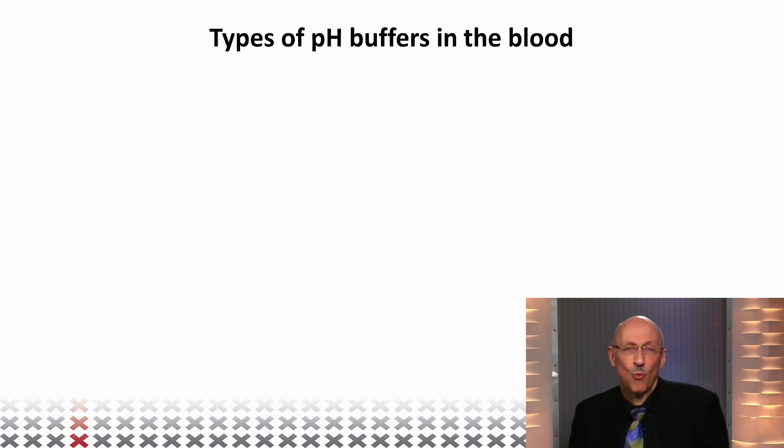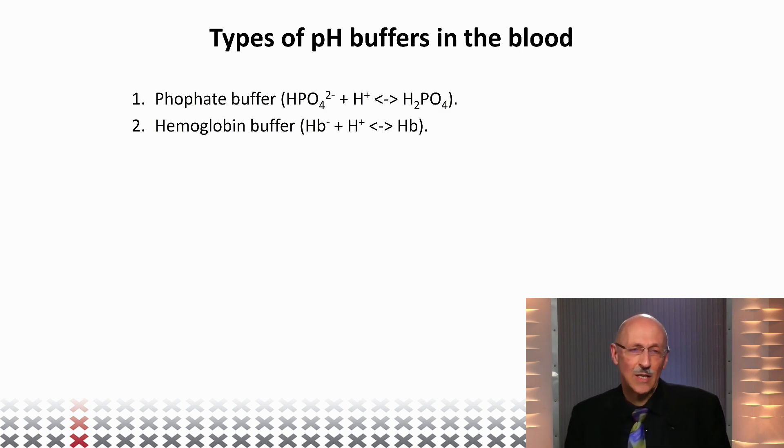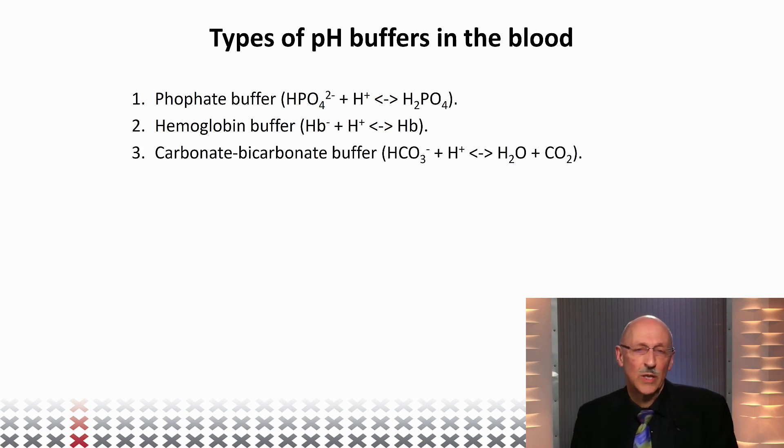So what kind of pH buffers does the blood have at its disposal to take care of controlling blood pH? Well, first of all, there's the phosphate buffer. Then secondly, there's the hemoglobin buffer. Hemoglobin can either pick up a proton or release it. And actually, it functions as a proton transporter in more ways than one. And certainly, we have the most important one, and that's the bicarbonate buffer.